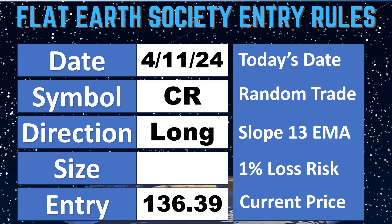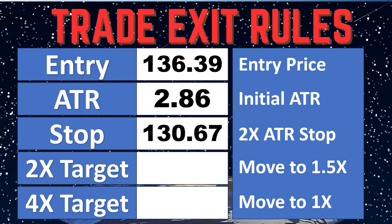Let's build the tick sheet. Trade 79 is for Chromium — a cool element. We could have gotten Einsteinium, which would have been cool, but we're with Chromium. CR, Crane Company, long at $136.39. Our ATR was $2.86, which gives us our stop at $130.67. We just need to figure out position sizing and then make the trade.